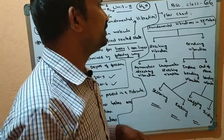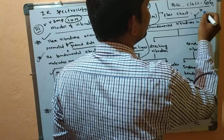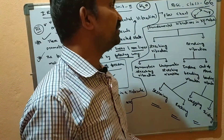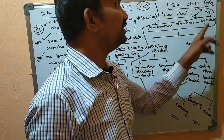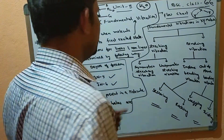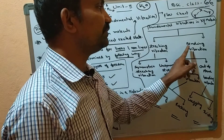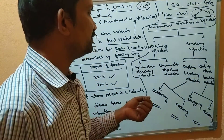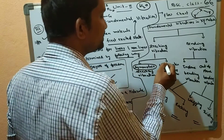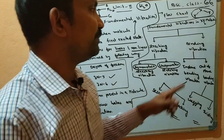Now let's look at the flow chart for a complete long answer. The molecule we are going to discuss is the XY2 nonlinear molecule. The fundamental vibrations in the XY2 molecule are of two types: stretching vibrations and bending vibrations. Stretching vibrations are again of two types: symmetric stretching and unsymmetric (asymmetric) stretching.